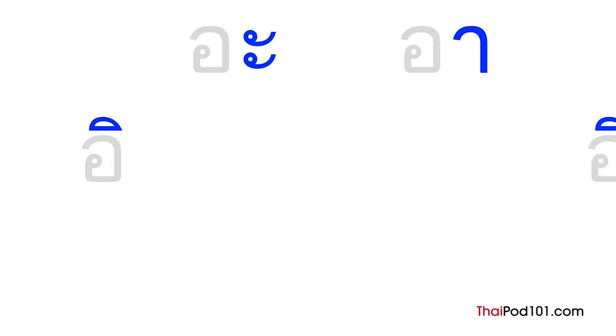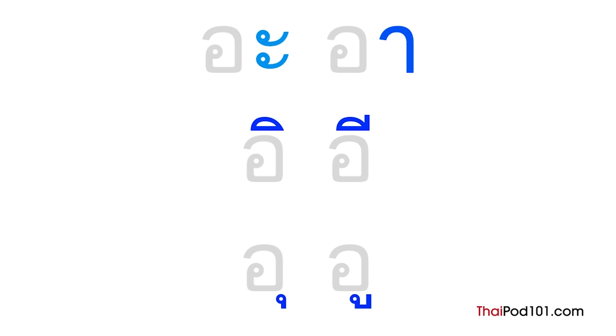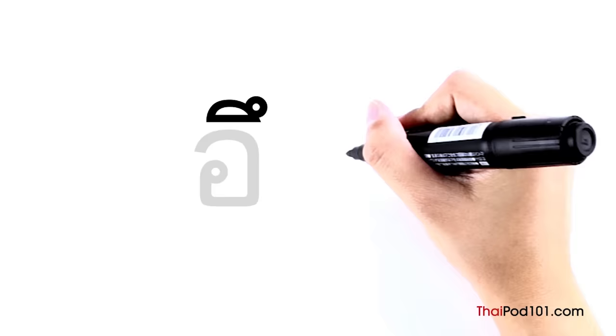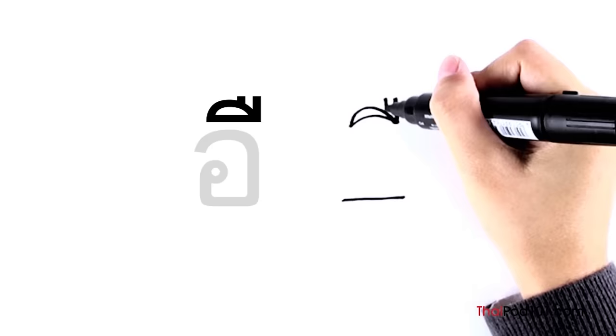Do you remember all the vowels we've already learned? We can put them in two pairs of short and long vowels with similar sounds. Now let's look at one more pair — vowels that don't exist in English, so it may take some practice. The sound is a bit like what you get when you try to say the sound with the corners of your mouth spread wide apart. Both of these vowels are written above a consonant.